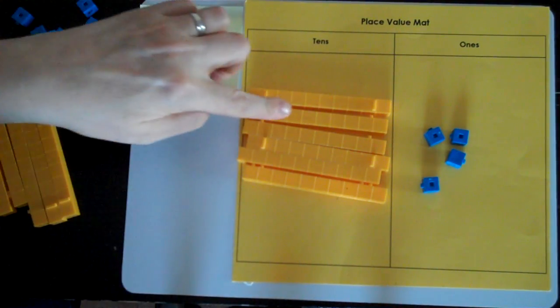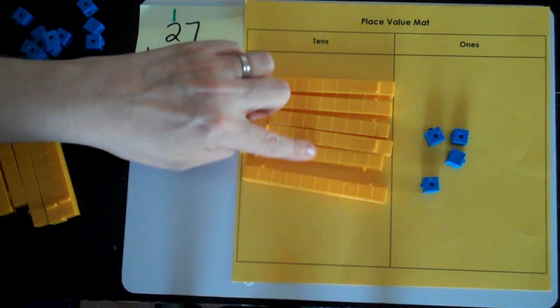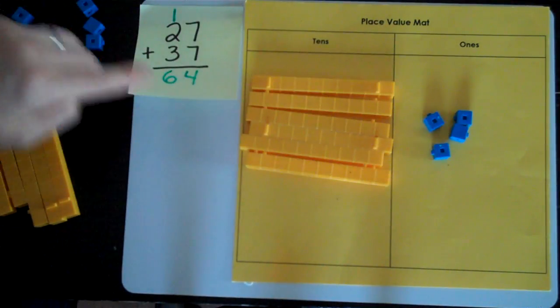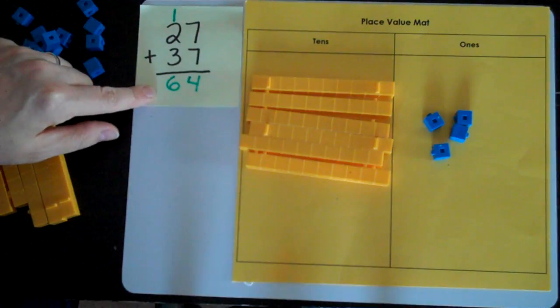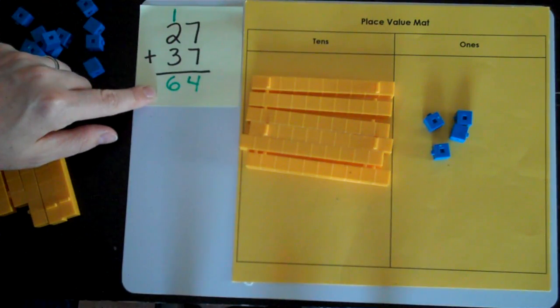I'm going to double check. 10, 20, 30, 40, 50, 60, 61, 62, 63, 64. I did lots of double checking on the way, so I am feeling very confident that I got the right answer. And now I'm ready to go on to another question.